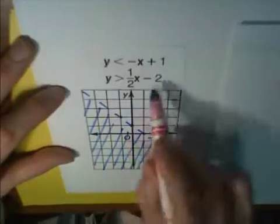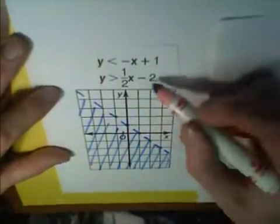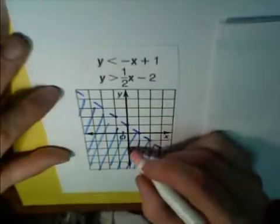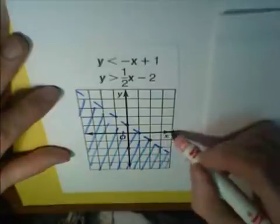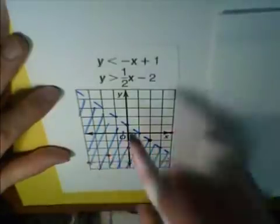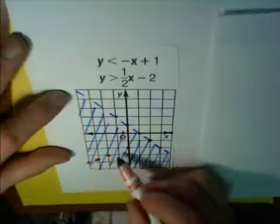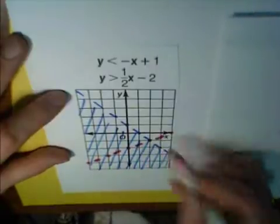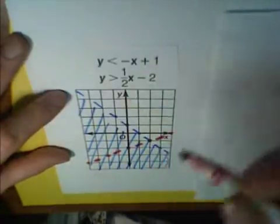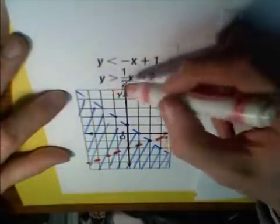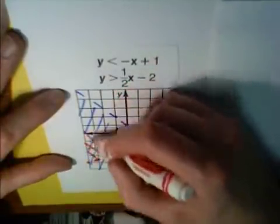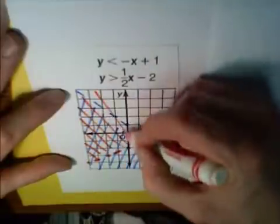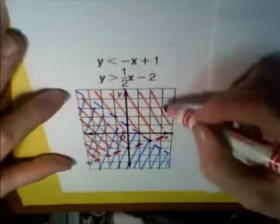Next, I'm going to graph the second inequality. My y-intercept here is negative 2. My slope is 1 half. Rise 1, run 2. Rise 1, run 2. Again, there's no equal to sign here. So this is definitely a dashed or a dotted line. Now, where do I shade? Y is greater than the line. So I shade above the line. Notice I'm using a different angle of cross-hatching.